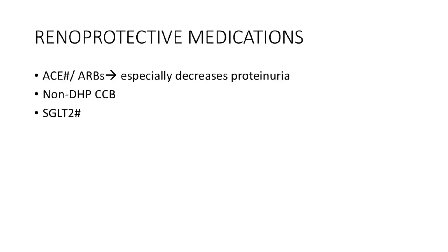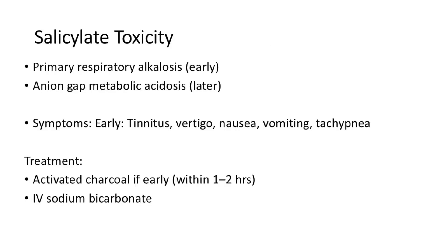Renoprotective medications play a vital role in decreasing proteinuria. ACE inhibitors and ARBs are particularly effective, along with non-DHP calcium channel blockers and SGLT2 inhibitors.